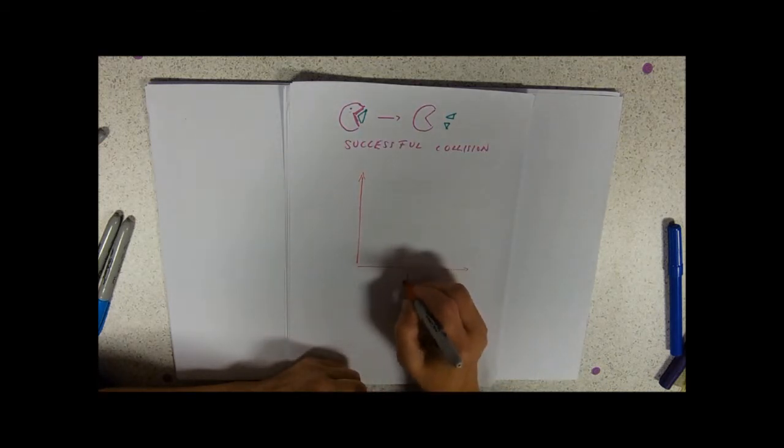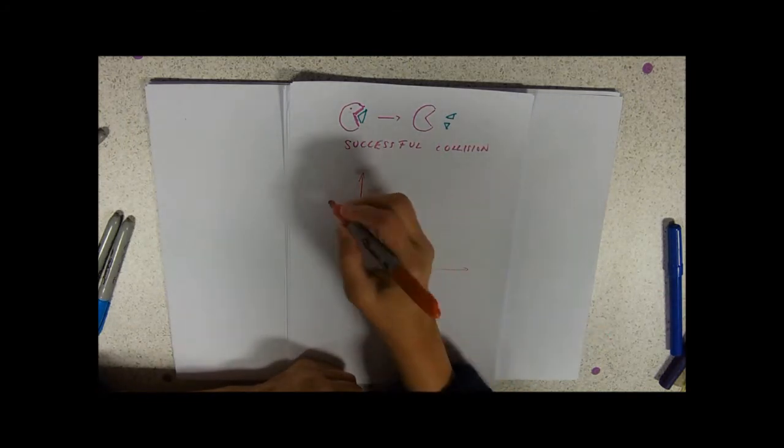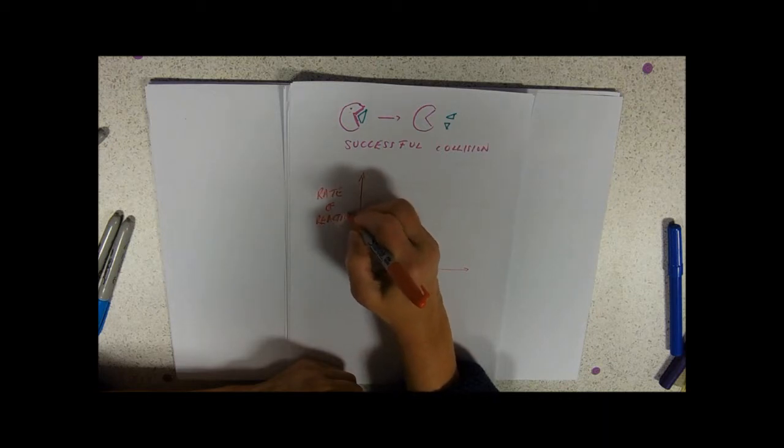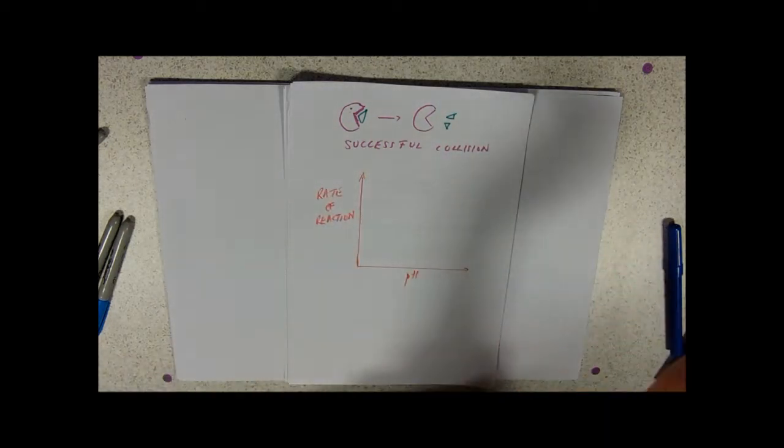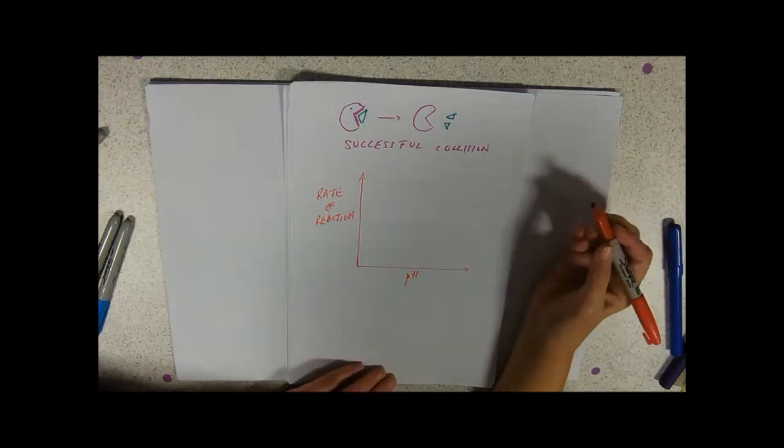So again along this axis we've got pH, remembering there is no pH zero. And again up the side, rate of reaction, and just like for temperature that could be mass of a product, volume of gas produced, could be one over the time taken for a reaction to happen.